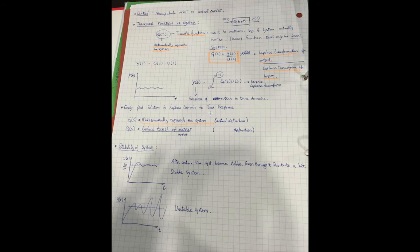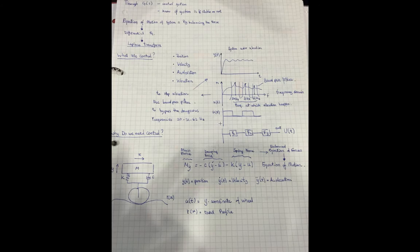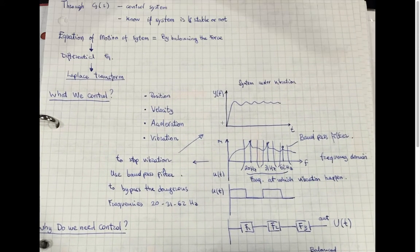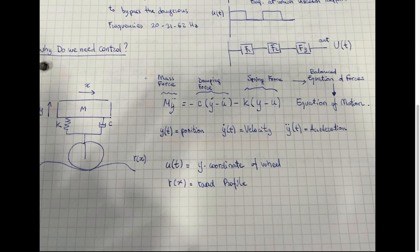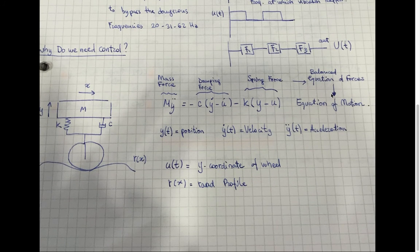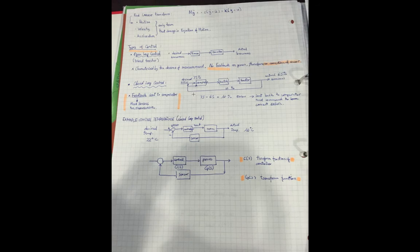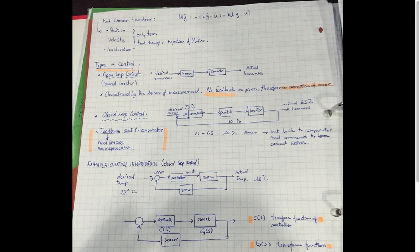You control position, velocity, acceleration, and vibration. The equation of the system, the equation of motion of the system, is given by differential equations. This is an example: we have mass, force being constant, and again we have position, velocity, acceleration.